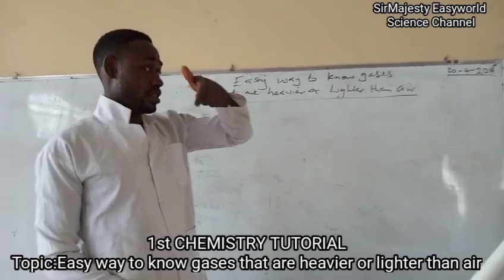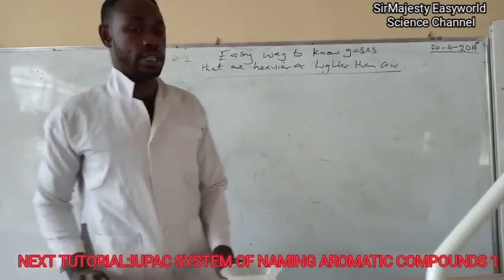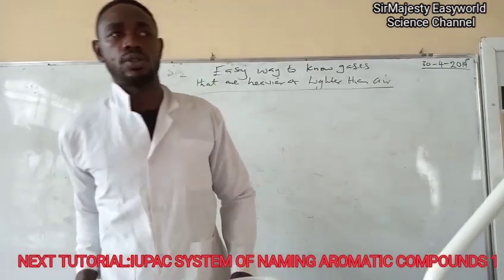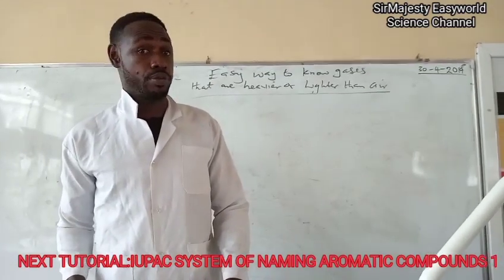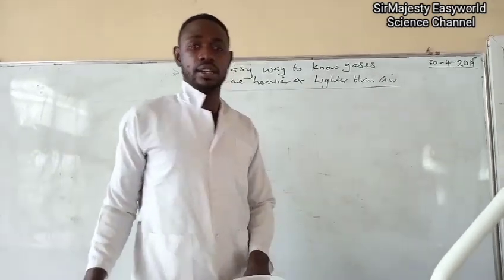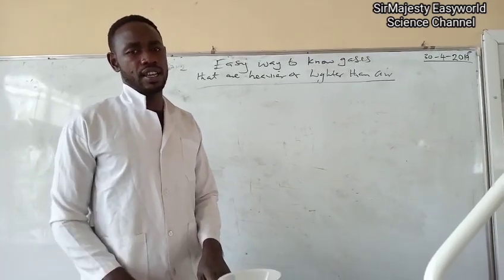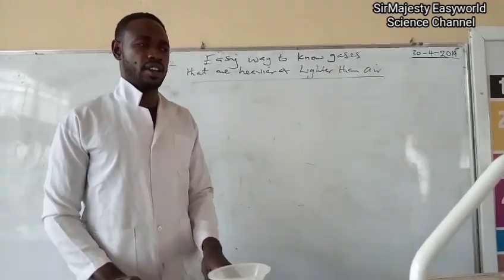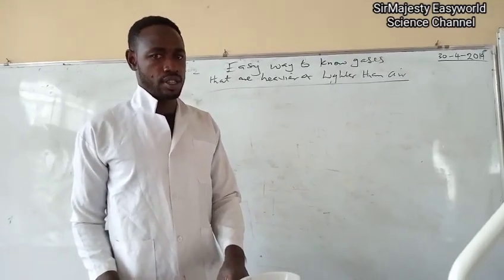Today we will take a look at the easy ways to know gases that are heavier than air or lighter than air. The importance of this is to know the appropriate method that you use to collect the gas in the lab after preparation, whether it's going to be by downward delivery or upward delivery. And we know this by the molar mass. But if you keep memorizing that chlorine, for example, is heavier than air, hydrogen is lighter, you may get confused. So this is the easy way out.